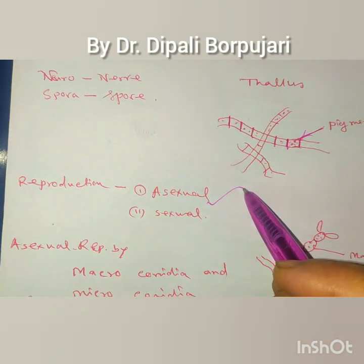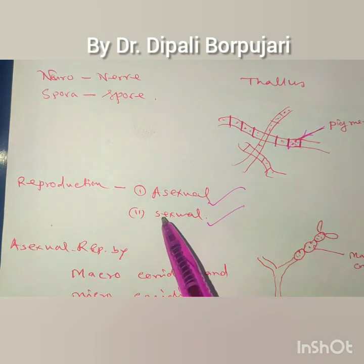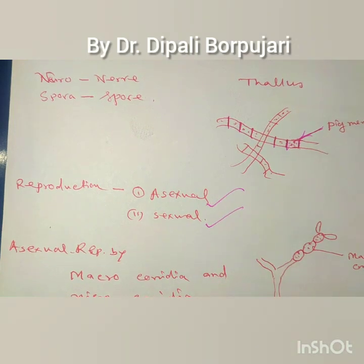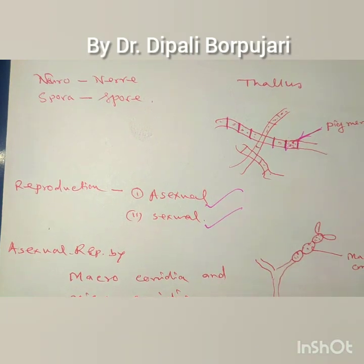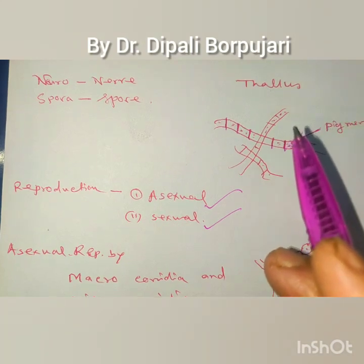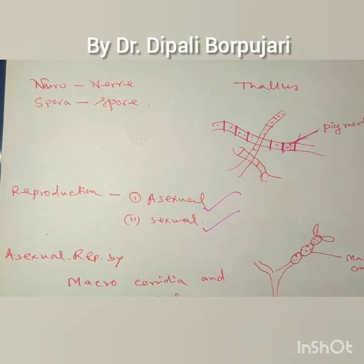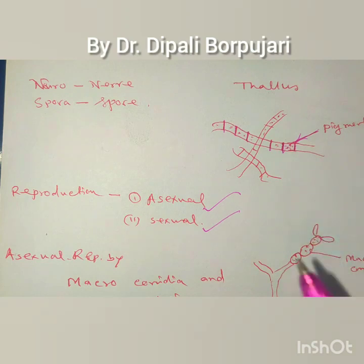Asexual reproduction takes place by means of conidia. Conidia may be macroconidia or microconidia. Macro means large in size. Macroconidia are large in size, oval-shaped, multi-nucleate, and pink colored.